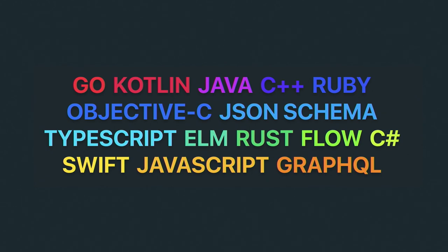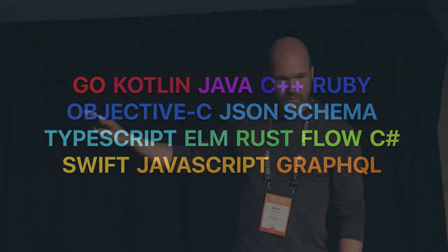We not only support JSON as an input, but so that you can be more rigorous, we also support JSON Schema. We also export JSON Schema, so you can infer the JSON Schema from the types in your API. And we also support GraphQL — that's a fairly new thing for us.